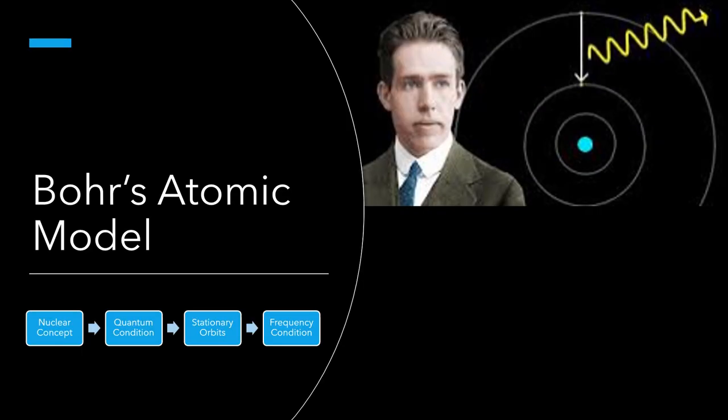To account for the drawbacks of Rutherford's model, Bohr suggested another model which has come to be known as Bohr's atomic model. He explained the hydrogen atom spectrum by applying the quantum theory of radiation to Rutherford's atomic model. Bohr's theory is based on the following postulates: